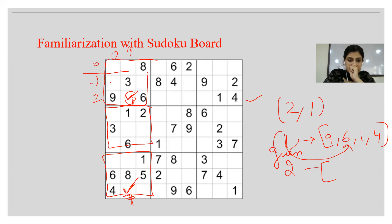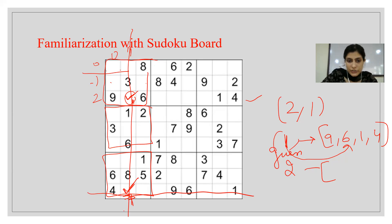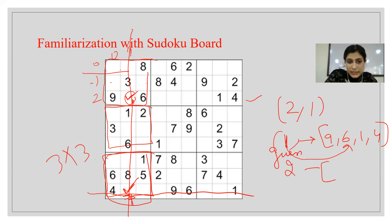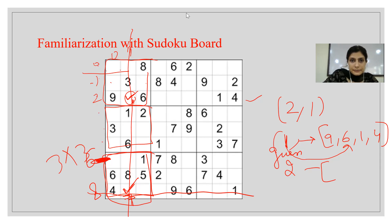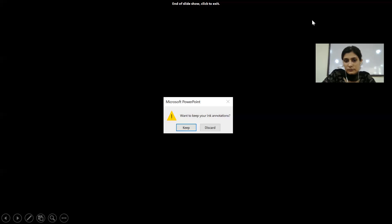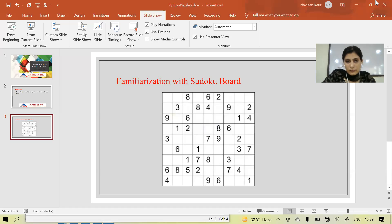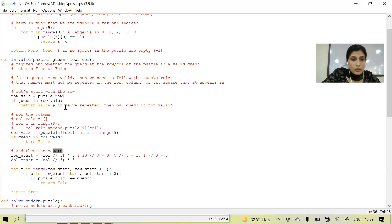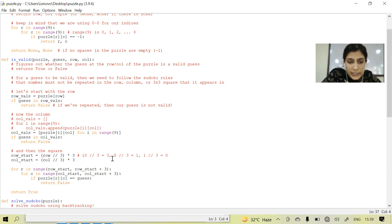My guess is seven. Seven is not present in the row, seven is also not present in the column — now I have to check that seven should not also be present in this three-by-three square. So now we are working on the square. We compute 'row_start' as: take the given row and apply floor division by three, then multiply by three.